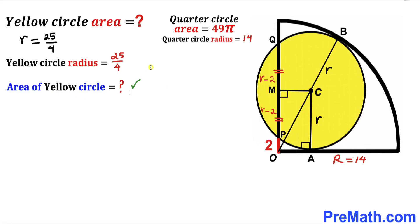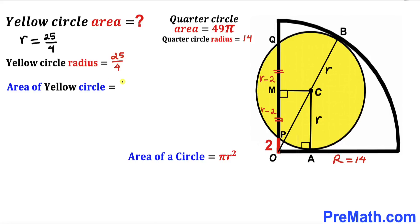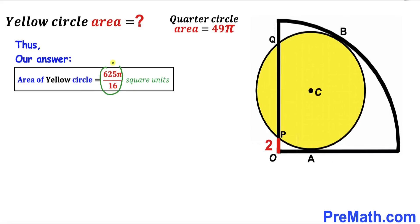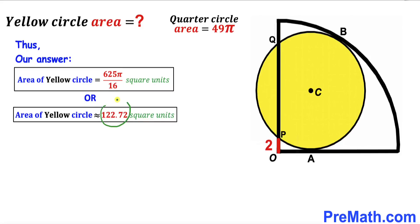For the final step, we calculate the area of the yellow circle using area = πr². With r = 25/4, the area = π × (25/4)² = 625π/16 square units, which is approximately 122.72 square units. Thanks for watching, and please don't forget to subscribe to my channel for more exciting videos!